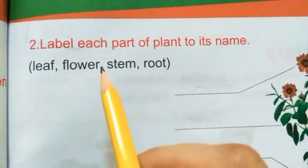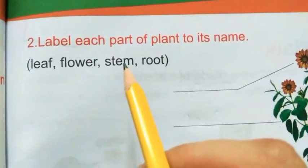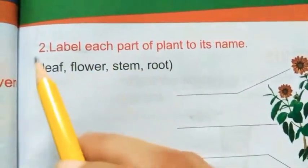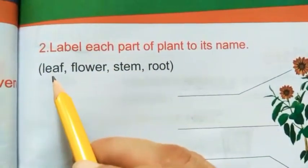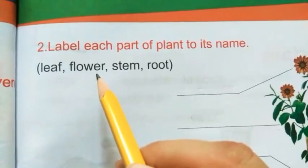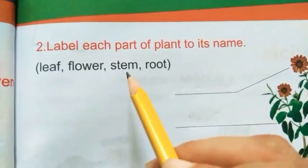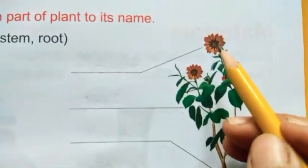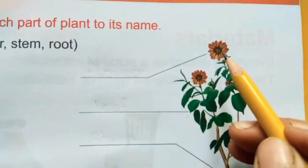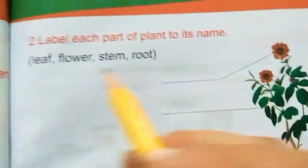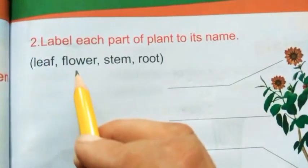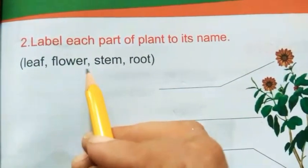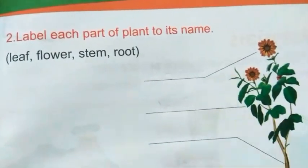The parts are: leaf, flower, stem, root. What is this? This is flower. So we will write flower — F-L-O-W-E-R.